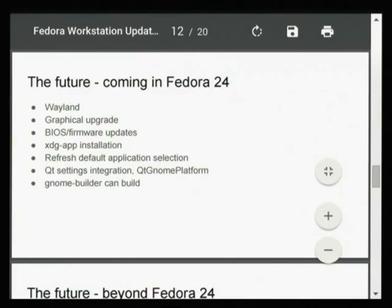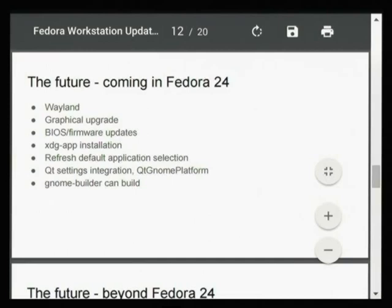A much better feature from a marketing perspective is a graphical upgrade tool in GNOME Software — the successor to the old preupgrade tool. When you run Fedora 24 and the next release comes out, it will offer you to download and install Fedora 25, and it will check whether any applications or packages you have installed might break due to that upgrade and warn you. We'll also try to backport this to Fedora 23 so you can use it to upgrade to Fedora 24 already.